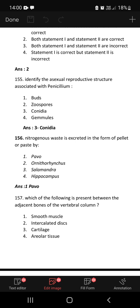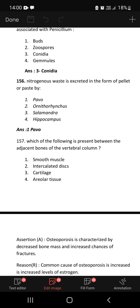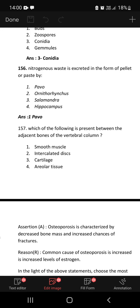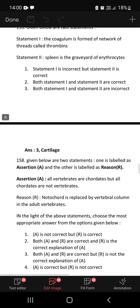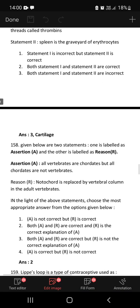154: Restriction endonuclease recognize specific sequence to cut DNA known as palindromic nucleotide sequence. Restriction endonucleases cut the DNA strand a little away from the center of the palindromic site. Both statement 1 and statement 2 are correct. Identify the asexual reproductive structure associated with penicillium: conidia is the answer. Nitrogenous waste is excreted in the form of pellet or paste. It happens in birds, so Pavo cristata, the scientific name of peacock. Which of the following is present between the adjacent bones of the vertebral column? Cartilage.